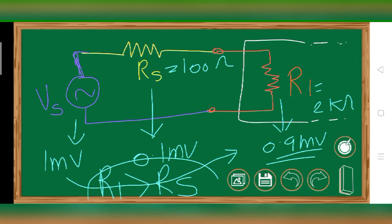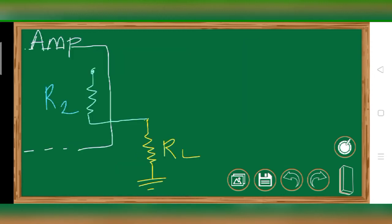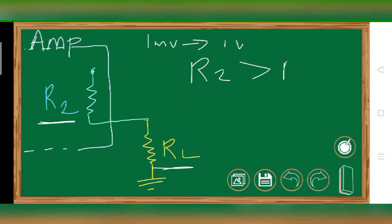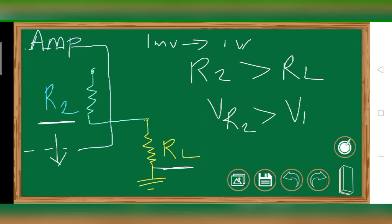Now let's look at the output impedance of any amplifier — whether it's an op-amp, BJT, or any FET. R2 is our output impedance and RL is the load resistor. We are designing our amplifier so that it amplifies a 1 millivolt signal to 1 volt. Consider a case where our output impedance R2 is greater than RL — the voltage drop across R2 would be higher than the drop across RL.